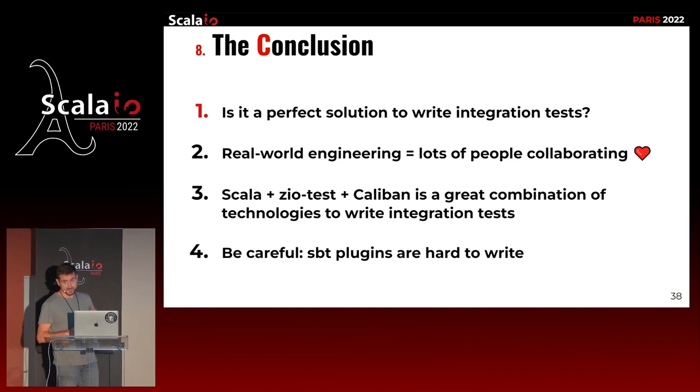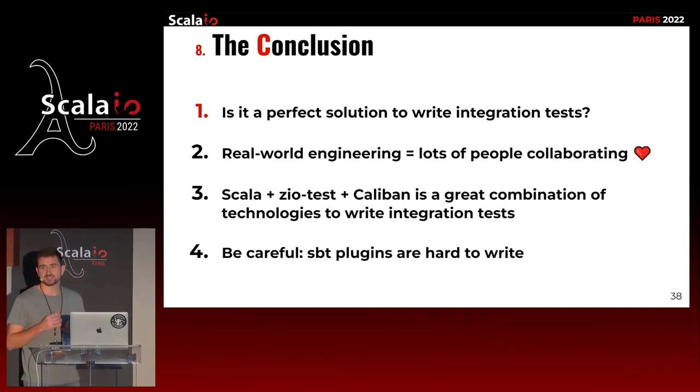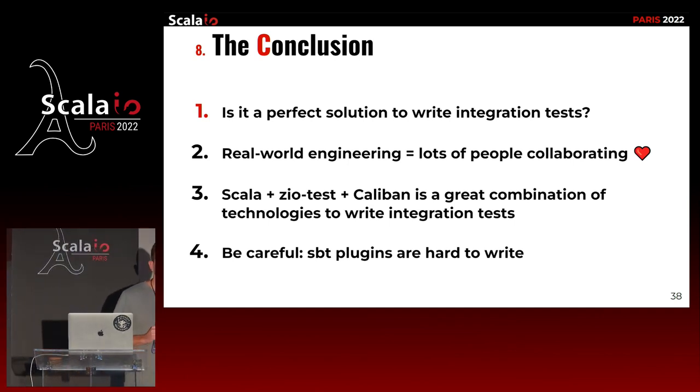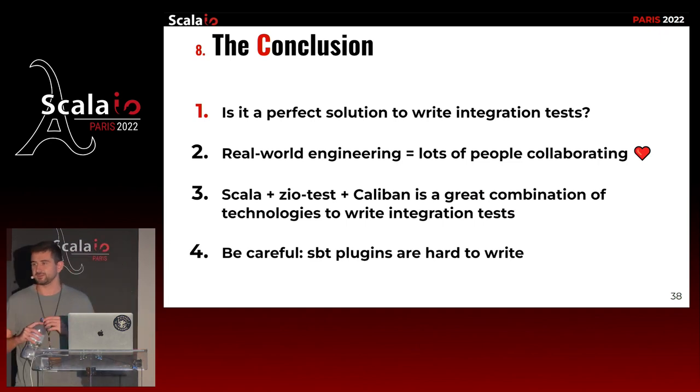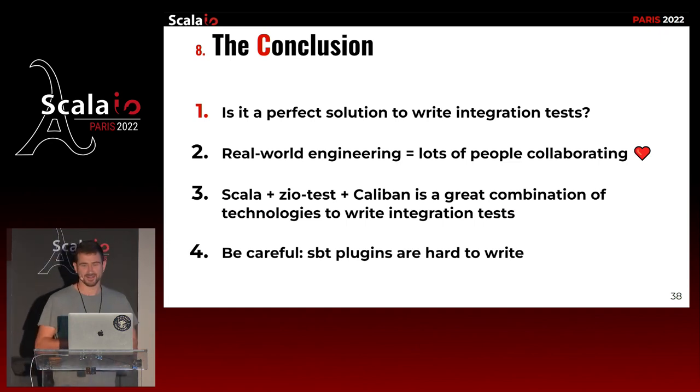Last point: SBT. Martin Odersky was talking about SBT and said he was not satisfied with it. I've written four SBT plugins in my life, and this was my most ambitious one — about four hundred lines of code. It's not big, but it took me a week to write those four hundred lines because it's super hard to make it compile. The task macro system is a real challenge. So be careful: if you have the idea of writing a plugin to automate something, good luck — it's really hard. Thank you very much.